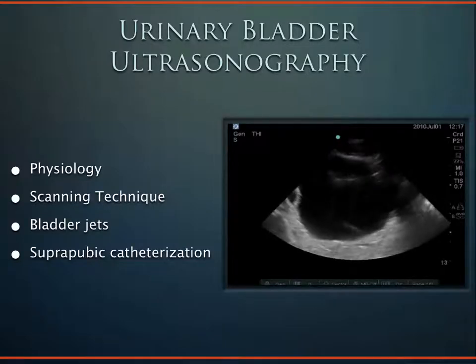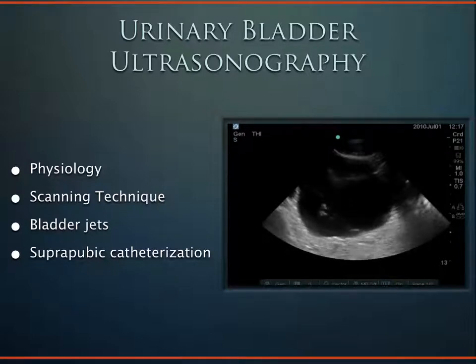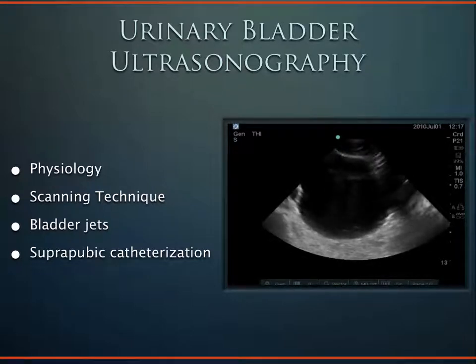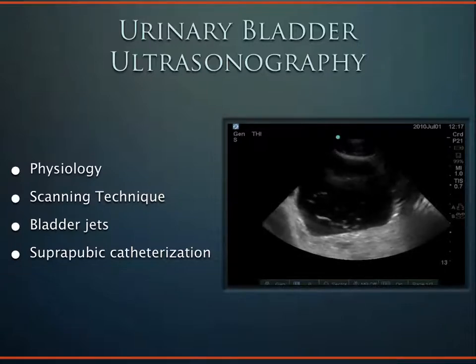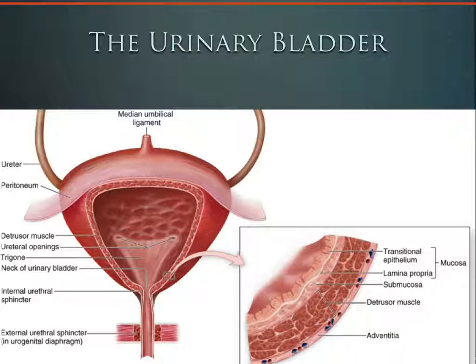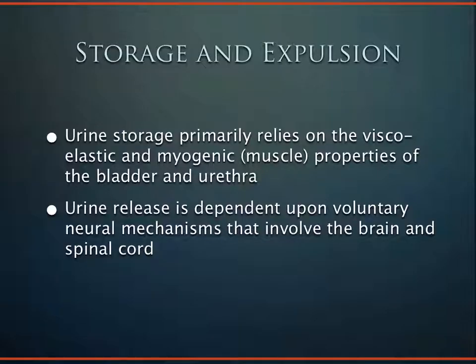Now we're going to change gears and talk about the bladder — moving from the kidney, skipping the ureters since we can't see them, and going down to the bladder. We'll talk about the physiology, scanning techniques, and bladder jets. The urinary bladder is an amazing organ capable of tremendous expansion and contraction. The muscle of the urinary bladder is known as the detrusor, made up of smooth muscle that responds to impulses of the autonomic nervous system and involuntarily contracts.